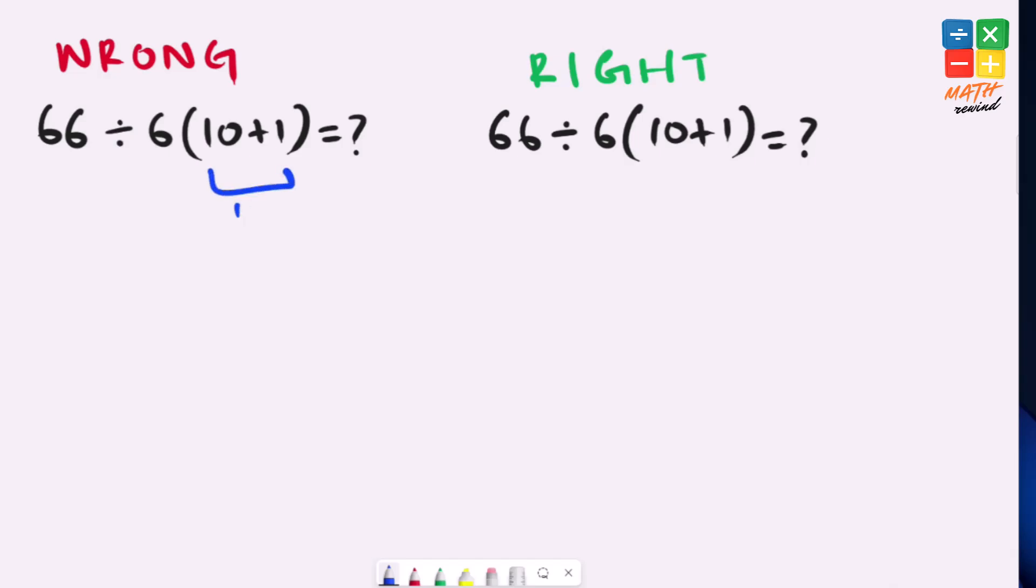10 plus 1 equals 11, 6 times 11 equals 66, and 66 divided by 6 equals 1. But this answer is not correct,